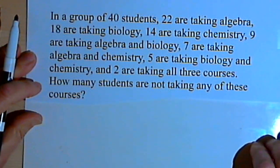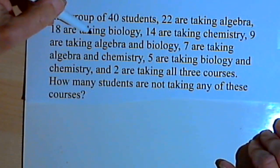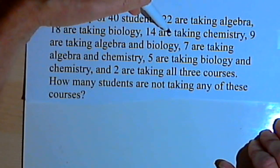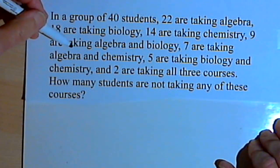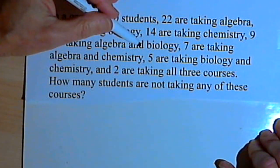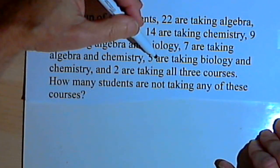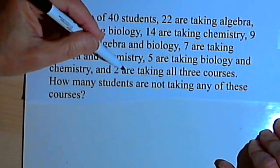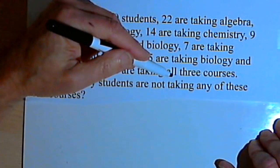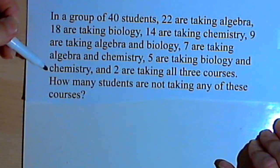In a group of 40 students, 22 are taking algebra, 18 are taking biology, 14 are taking chemistry, 9 are taking algebra and biology, 7 are taking algebra and chemistry, 5 are taking biology and chemistry, and 2 are taking all three courses. How many students are not taking any of these courses?